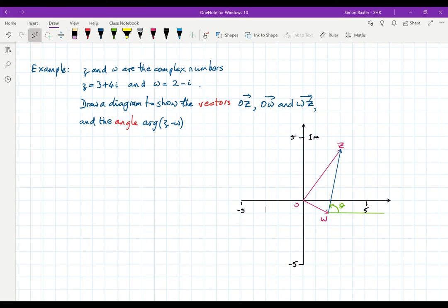So here I have drawn the diagram and you can see that I've put in the vector OZ. The number was 3 plus 4i, the vector is 3, 4. Complex number W was 2 minus i, the vector is 2 minus 1. There's the vector WZ and the angle made by WZ with the positive X axis is the argument of Z minus W.